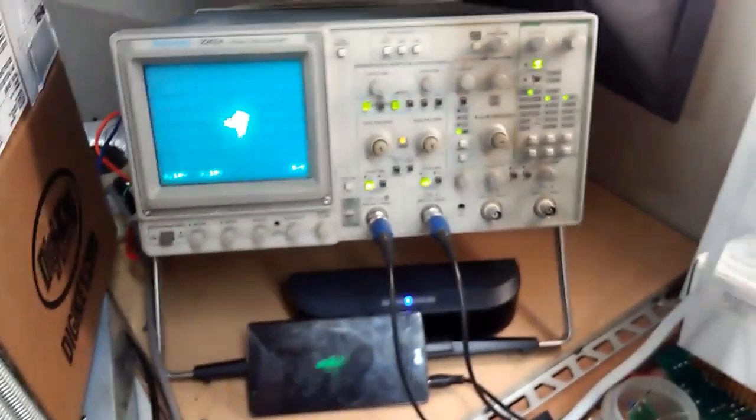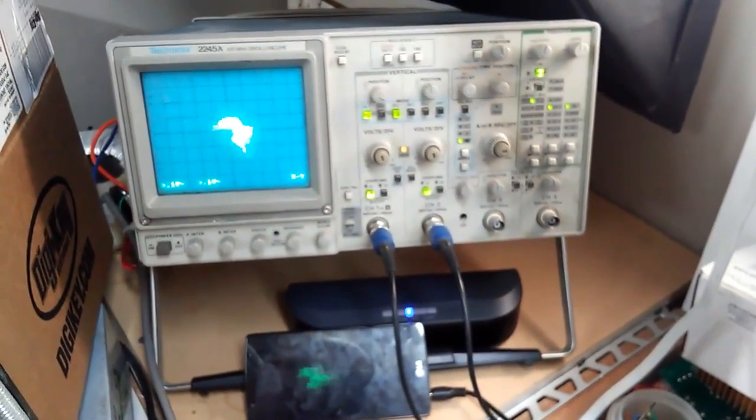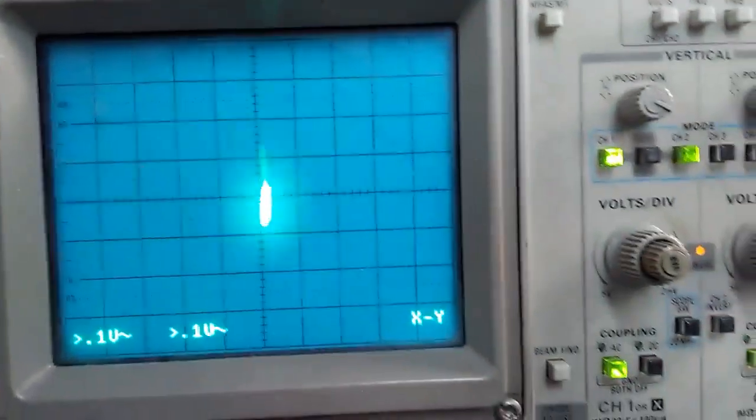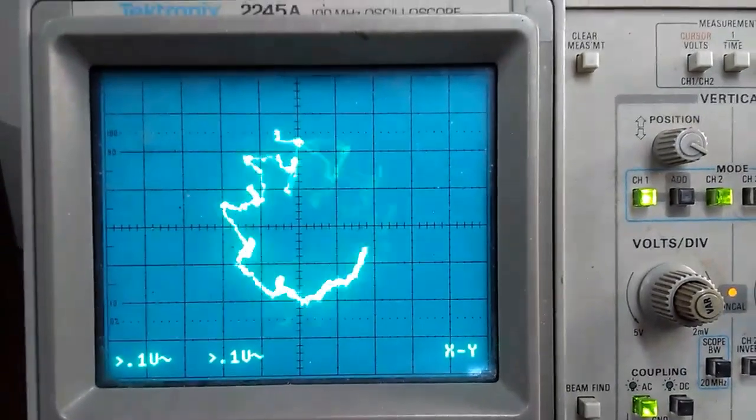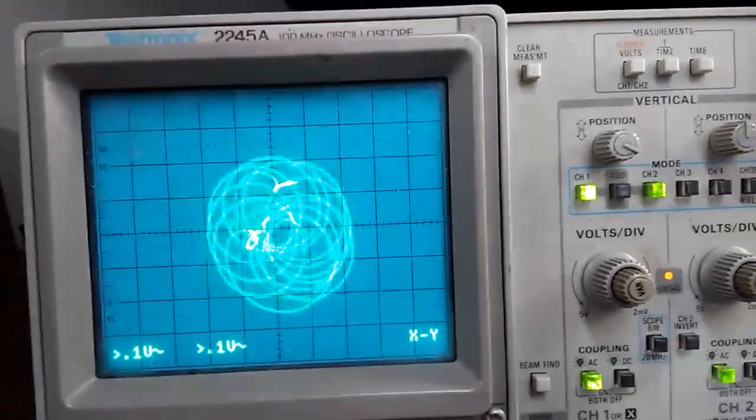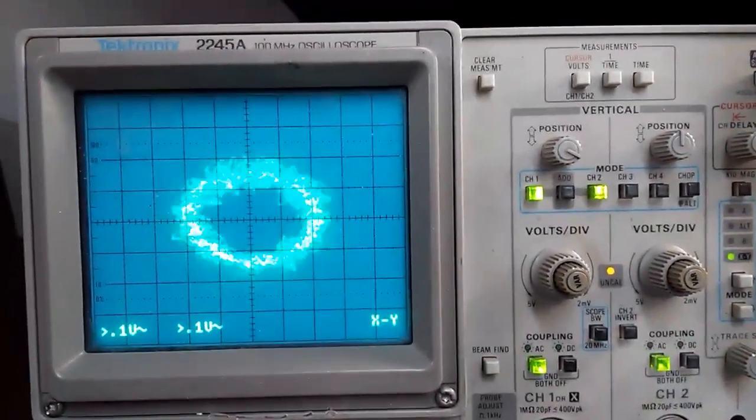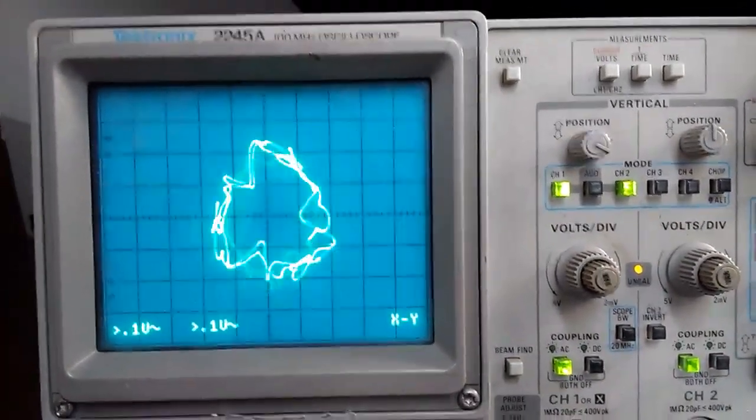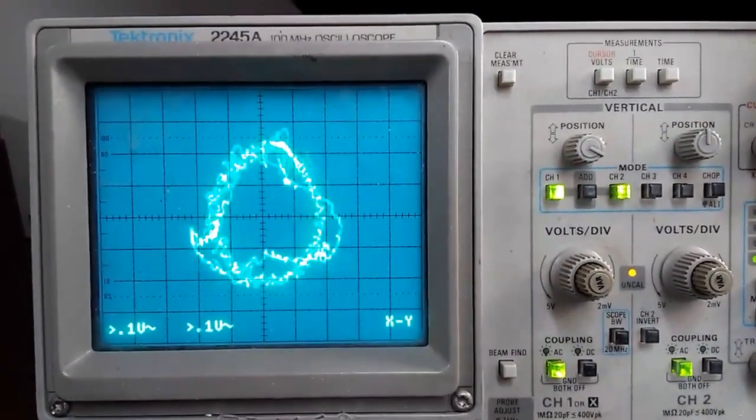Now first we need a sine wave on our horizontal deflection channel and a cosine wave on our vertical deflection channel. Together they add up to a beautiful circle. We can alter its size and shape by increasing or decreasing the volume of both channels.